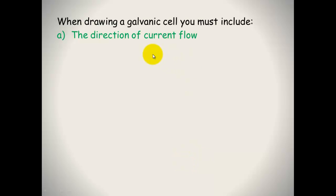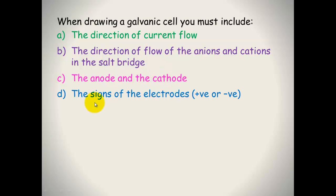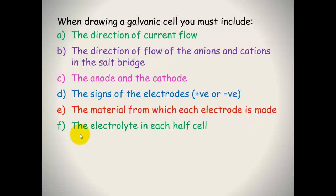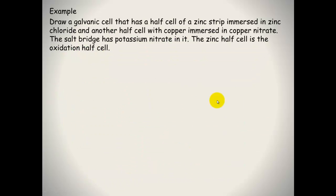When drawing a galvanic cell, you must include: the direction of current flow along the wire; the direction of flow of anions and cations in the salt bridge; labels for the anode and cathode; the signs of the electrodes (positive or negative); the material each electrode is made of; the electrolyte in each half cell; the half equations; and the overall redox reaction.